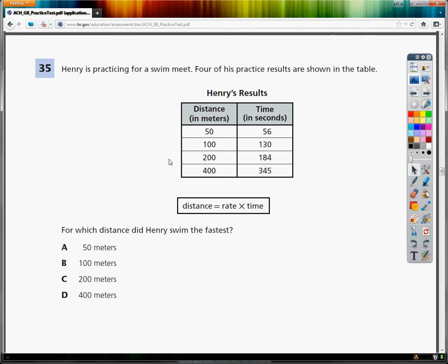They give us that formula: distance equals rate times time. What we're looking for is the rate that he swam, because they give you distance and time for each practice. So what we're looking for is rate.